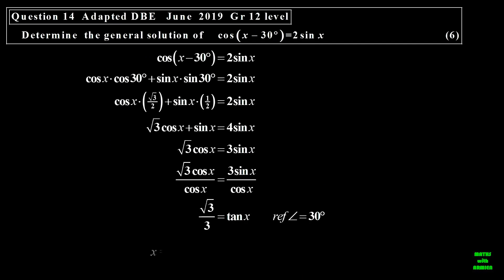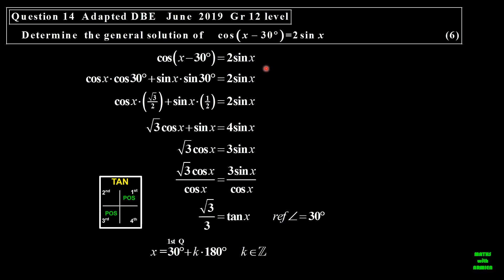Let's look at the following one. We have sine of (x minus 30) equal to 2 sine x. I cannot use the co-ratio, so I'm going to use the compound angle identity for sine (x minus 30). I expand that. 30 is a special angle. I put the values in there for the special angle ratios. I then simplify by multiplying both sides by the common denominator of 2. I divide both sides by cosine, so this becomes tangent. So tangent of x is root 3 over 3. Finding the reference angle, it's exactly 30. Because I want a general solution, I only have to take the first quadrant. So it's 30 degrees plus the generating term k times 180, and k is an element of z.